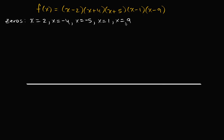We go as low as x equals negative five and as high as x equals nine. So let me draw something like this — my y-axis and my x-axis.